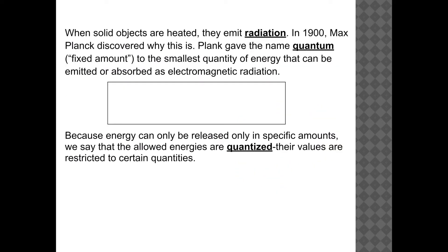There are three experiments or discoveries that led us to our quantum model of the atom. The first is that scientists noticed that when solid objects were heated, they emitted radiation — like when you roast s'mores and the metal turns red. In 1900, Max Planck discovered why this happens. He gave the name 'quantum,' meaning fixed amount, to the smallest quantity of energy that can be emitted or absorbed as electromagnetic radiation.